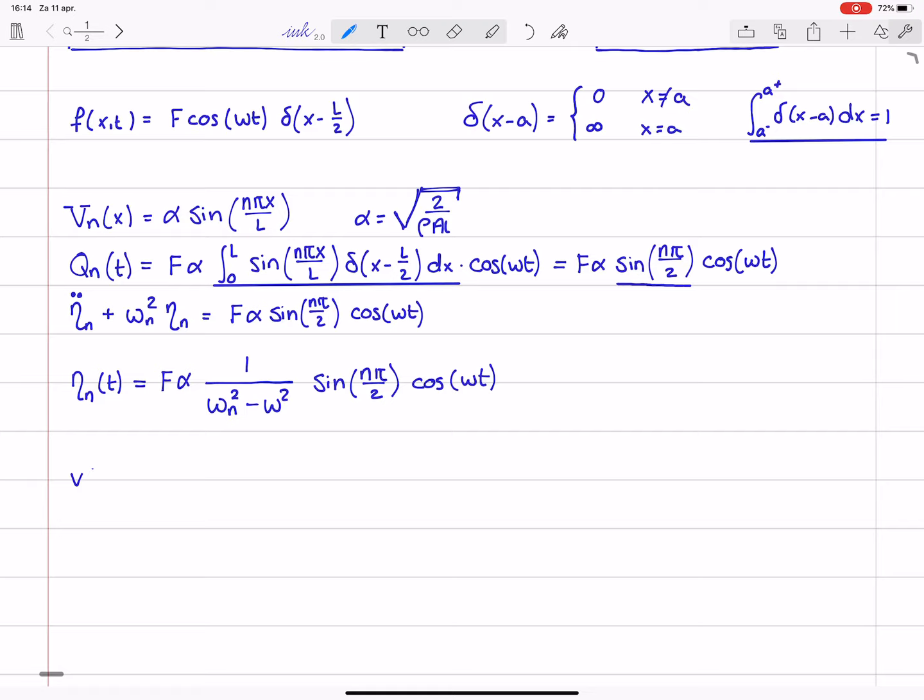Okay, so by back substitution we have the expression for v as a function of x and t which is the infinite sum of the mode shapes times the corresponding coordinates so that will be the infinite sum of n equal to 1 all the way to infinity of